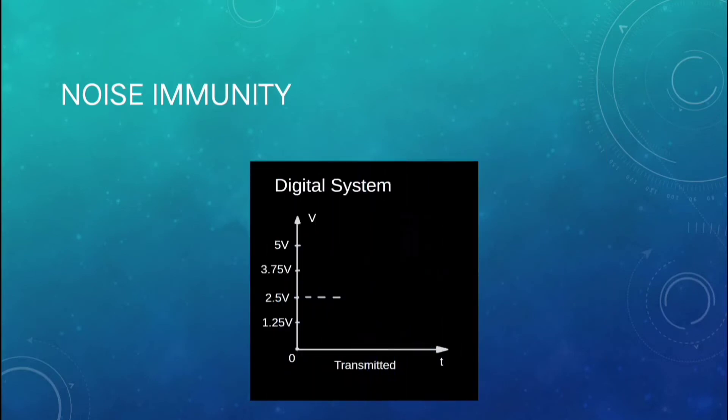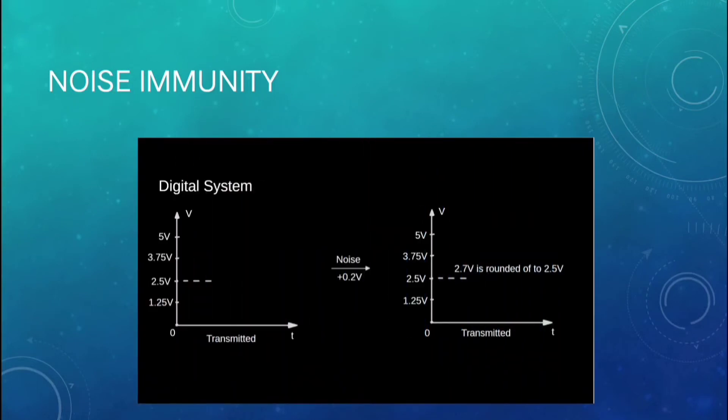Whereas in digital systems, there are prescribed levels. Suppose we take 4 levels, then the levels are 1.25, 2.5, 3.75 and 5 volts and we are transmitting 2.5 volts. If 0.2 volt noise is added, then the received voltage will be 2.7 volts and if this voltage is not present in the levels, then the voltage is rounded off to the below level. So the voltage would be 2.5 volts. So the effect of noise is avoided.